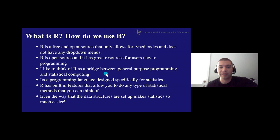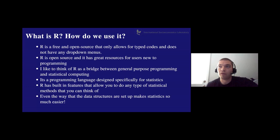R has built-in features that allow you to do any type of statistical method you can think of. It has everything from basic statistics to advanced machine learning packages, web development features, interactive apps so people can access your data, and reports via R Markdown. One thing R is known for is how great its plotting is — many people use R over Python and SAS just because of the plotting. It's so easy to use and the plots look great.